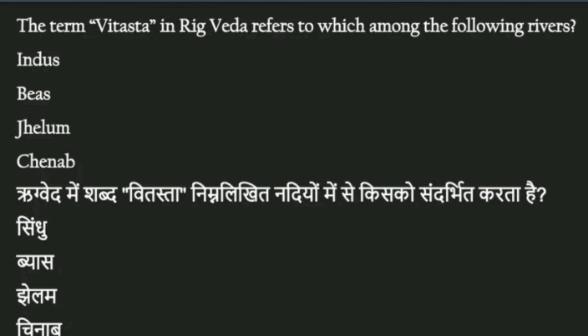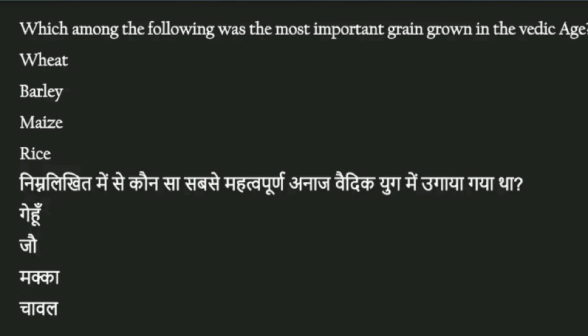Prashna: Rigveda mein shabd 'Vitasta' nimnlikhit nadiyon mein se kis ko sandarbhit karta hai? Options: Sindhu, Vyas, Jhelum, Chinab. Iska answer hai - Jhelum. Prashna: Nimnlikhit mein se kaunsa sabse mahatvapurna anaaj Vedic yug mein ugaya gaya tha? Options: Gehun, Jau, Makka, Chawal. Iska answer hai - Jau.